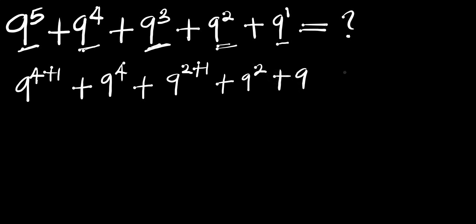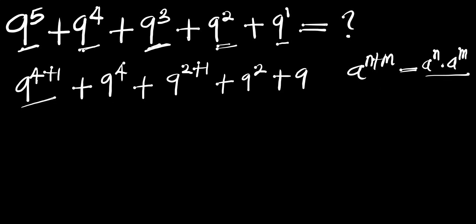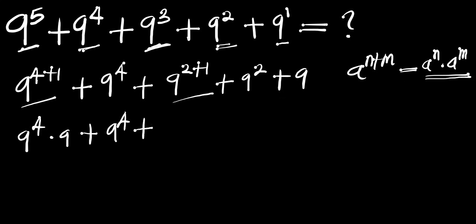Now the next thing is to apply this identity: if you have a to the power of n plus m, this equals a to the power of n times a to the power of m. Applying this identity, we get 9 to the power of 4 times 9 — because 9 to the power of 1 is 9 — plus 9 to the power of 4, plus 9 to the power of 2 times 9, plus 9 to the power of 2, plus 9.